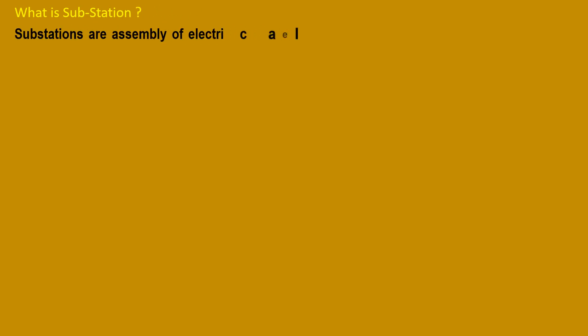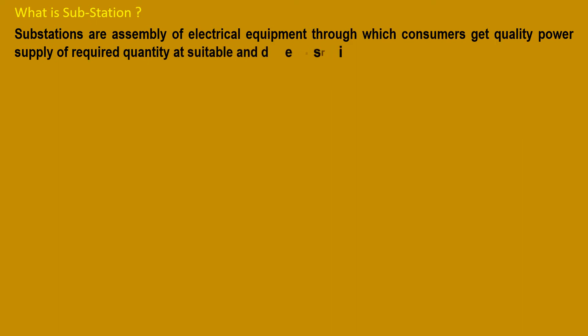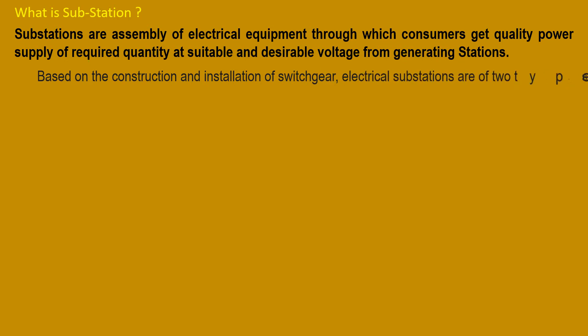What is a substation? Substations are an assembly of electrical equipment through which consumers get quality power supply of the required quantity at suitable and desirable voltage from generating stations. Based on construction and installation of switchgear, electrical substations are two types: air insulated substation (AIS) and gas insulated substation (GIS).